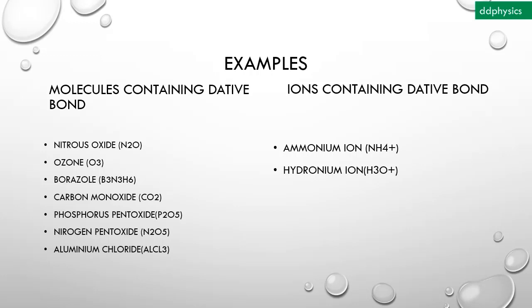Examples. Molecules containing dative bond: nitrous oxide N2O, ozone O3, borazole B3N3H6, carbon monoxide CO, phosphorus pentoxide P2O5, nitrogen pentoxide N2O5, aluminum chloride AlCl3. And ions containing dative bond: ammonium ion NH4+, hydronium ion H3O+.